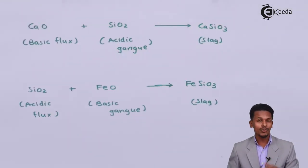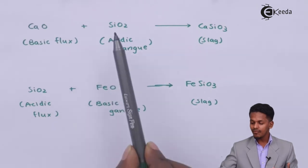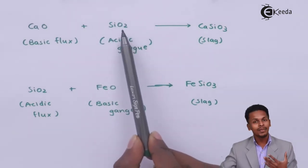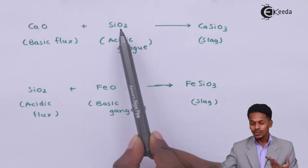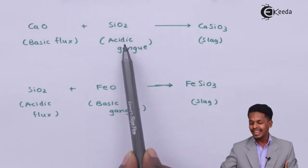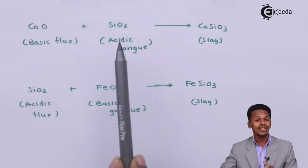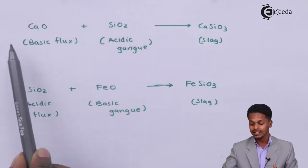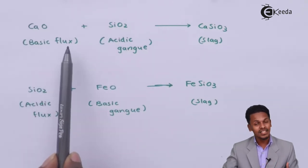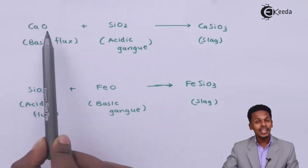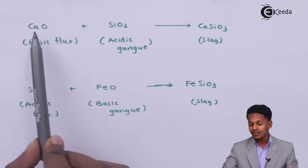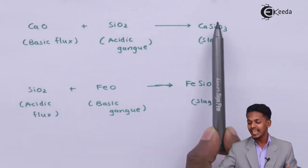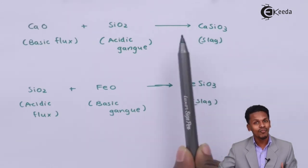For example, if an ore contains SiO2 as an impurity, silica acts as an acidic gangue. To remove it, we use a basic flux — CaO acts as the basic flux and reacts with SiO2 to form CaSiO3, which is removed in the form of slag.